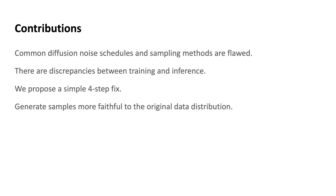Our contribution is that we found the real problem causing this issue is in the common diffusion noise schedules and sampling steps — they are in fact flawed. There are discrepancies between training and inference, and we propose a simple four-step fix. With our fix, the model can generate samples more faithful to the original data distribution.